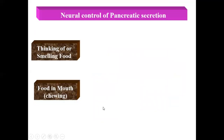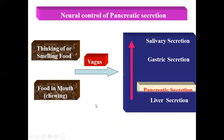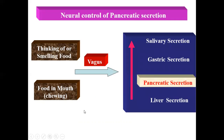Neural control of pancreatic secretion occurs through conditioned and unconditioned reflexes via the vagus nerve. The vagus nerve controls salivary, gastric, pancreatic, and liver secretions — it is one of the most important controls of secretion from the entire GIT, acting through both conditioned and unconditioned reflexes.